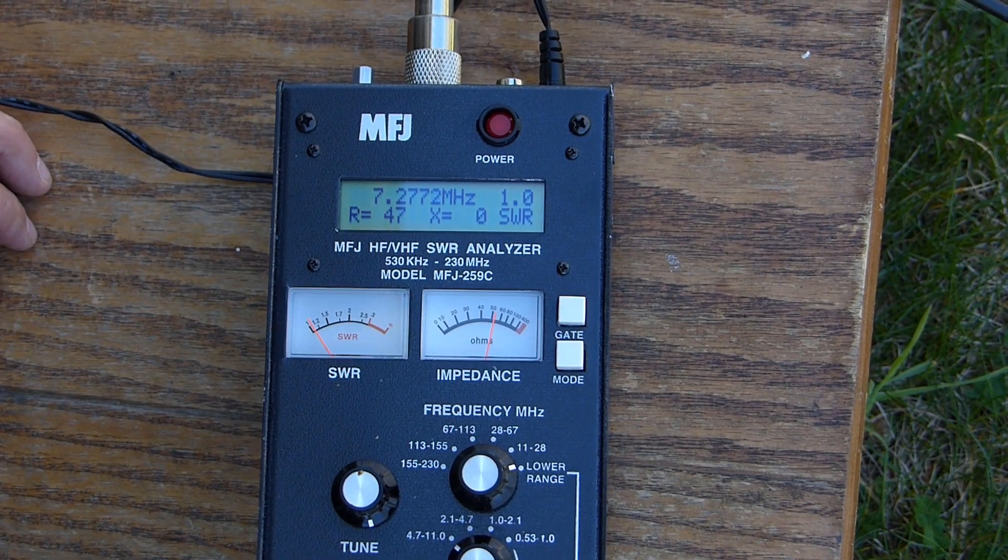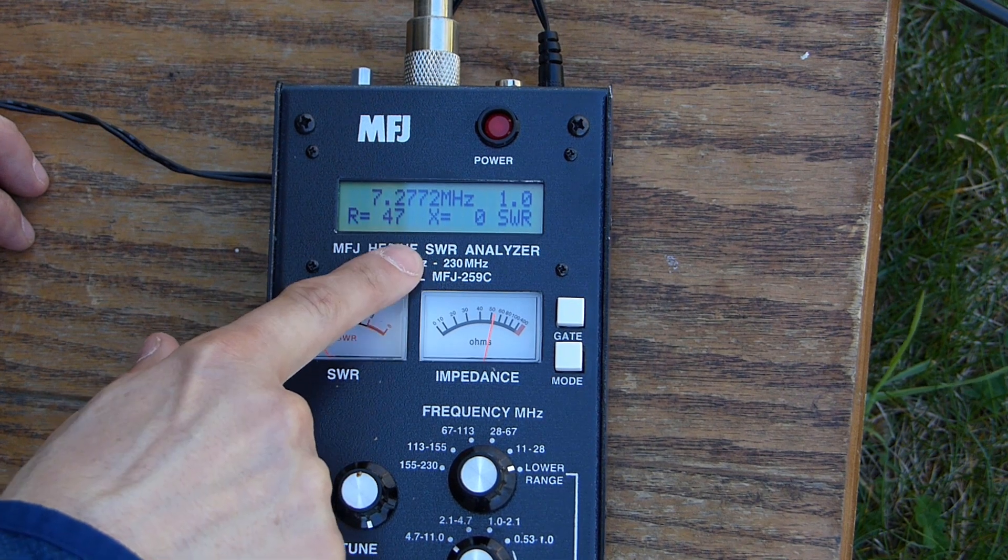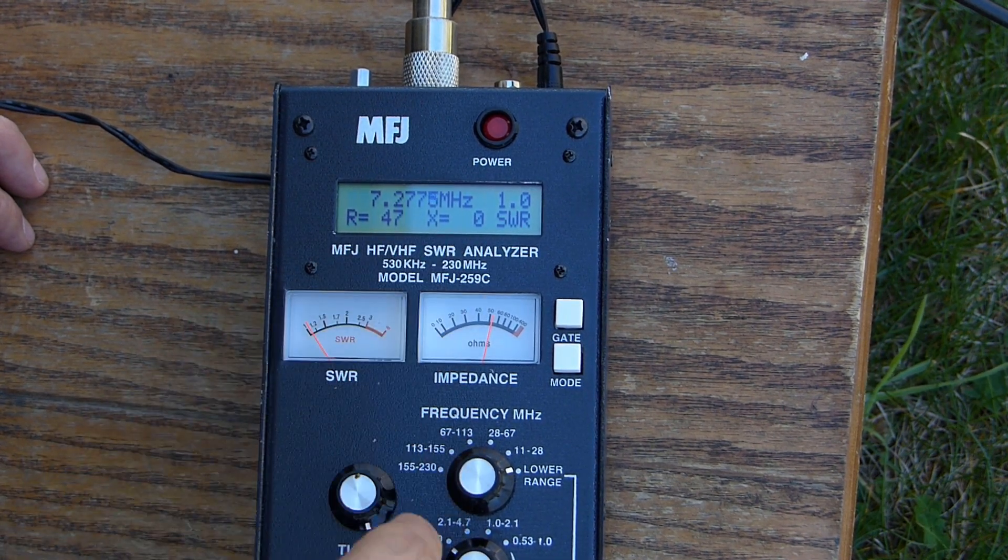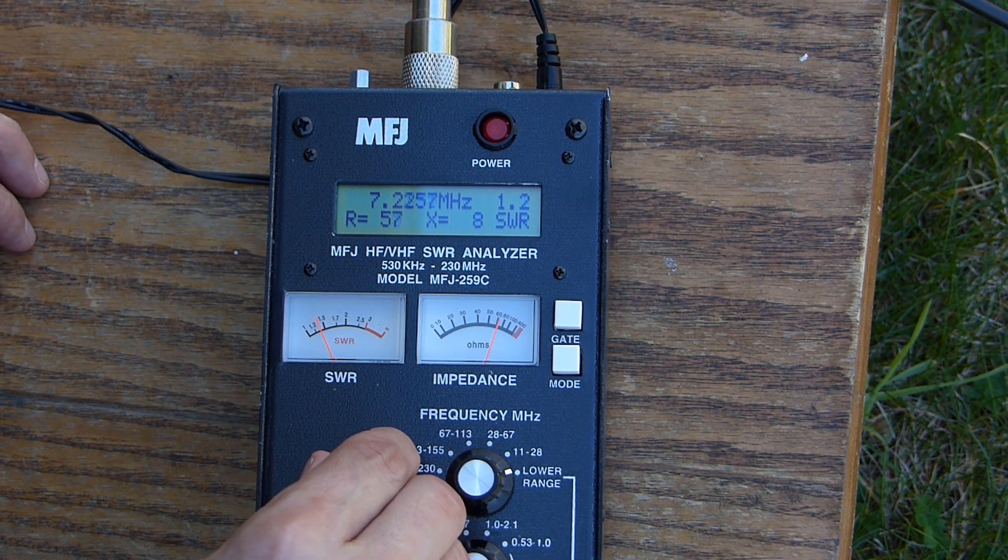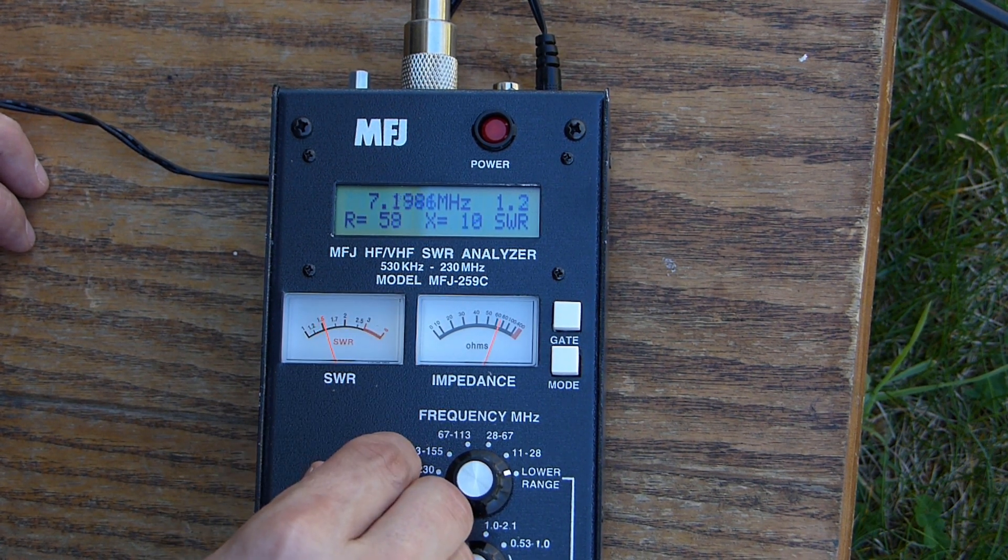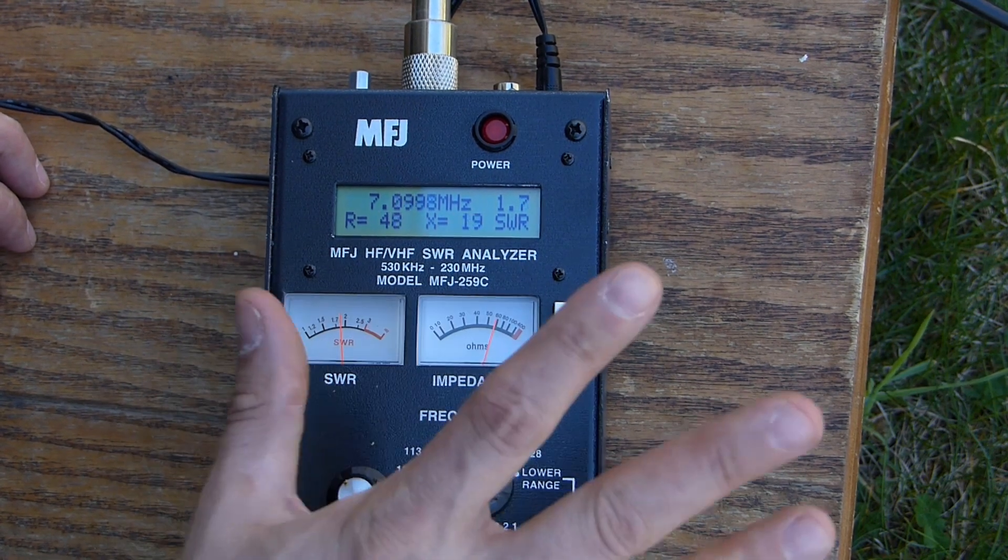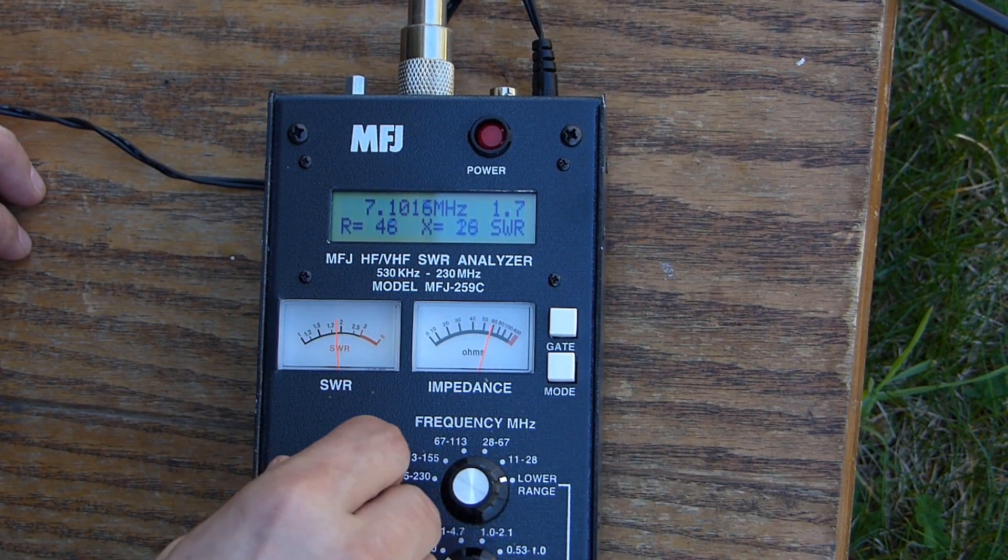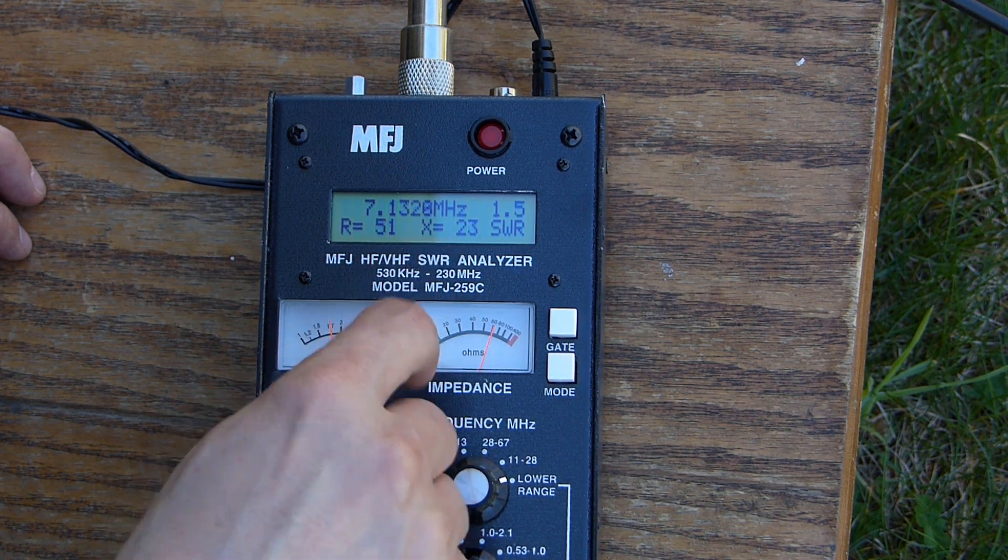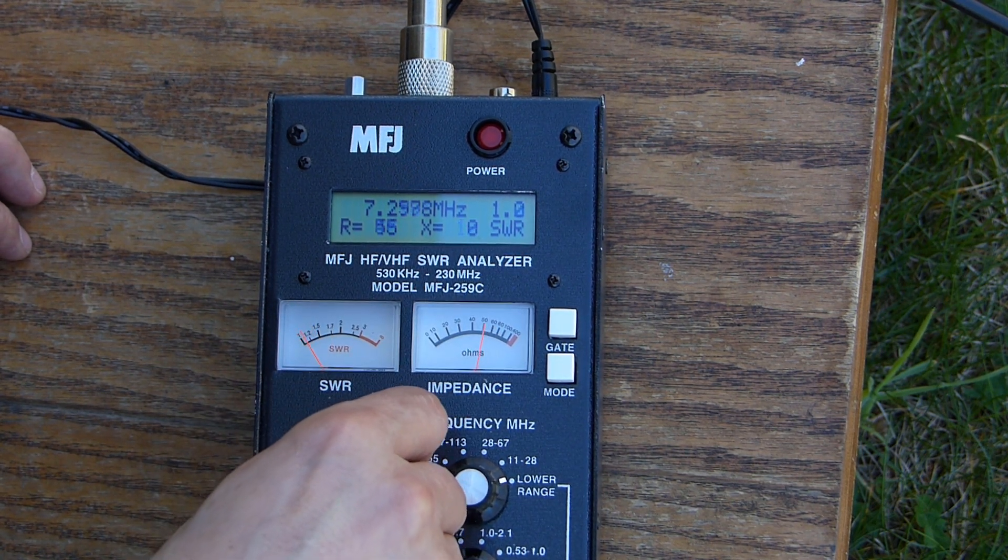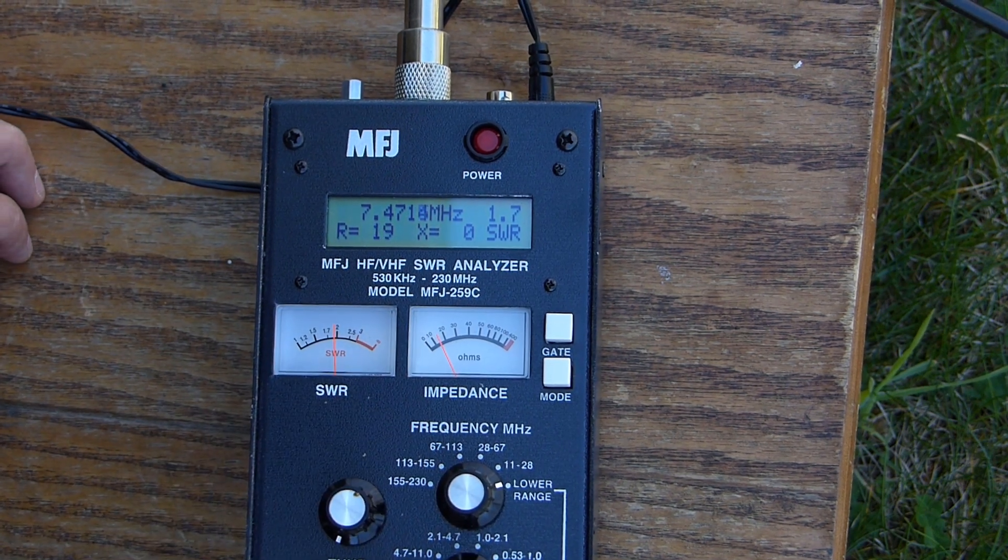Now we've got everything hooked up to the analyzer here. And you can see right about at the middle of the 40 meter band, things are looking pretty good. So I don't think we need to do anything there. If I slide up and down the band a little bit, you can see that as we go down the band, the SWR goes up relatively sharply, which is what you would expect. This is kind of thin diameter wire. But everything looks like it's pretty usable. A little bit of inductance here as we get away from the center frequency. But overall, I think we're going to be pretty good here right on 40 meters.